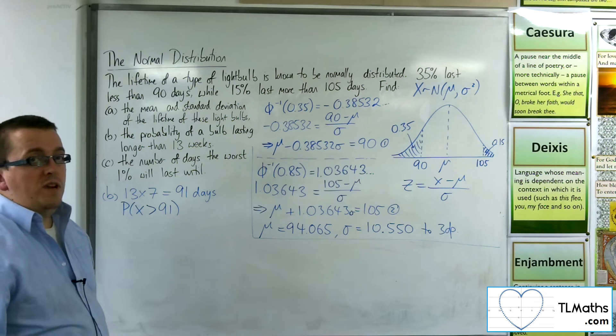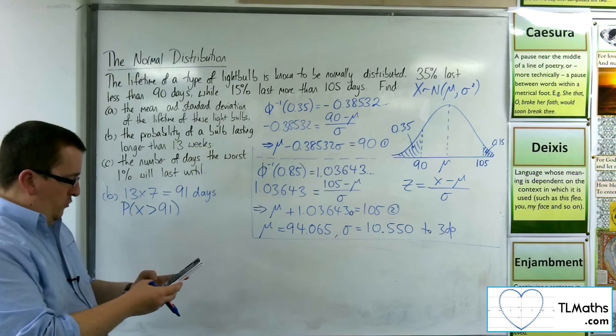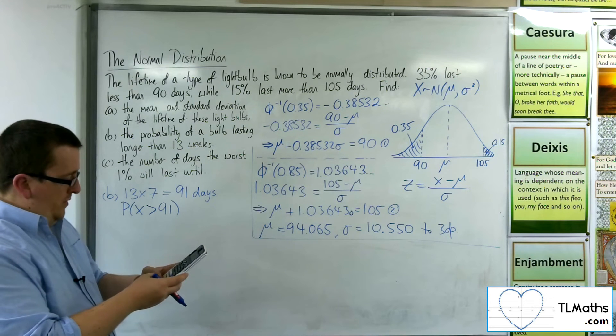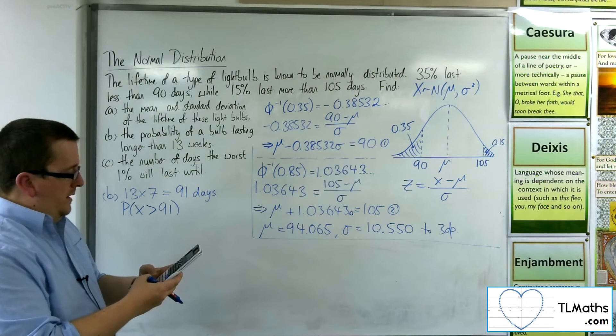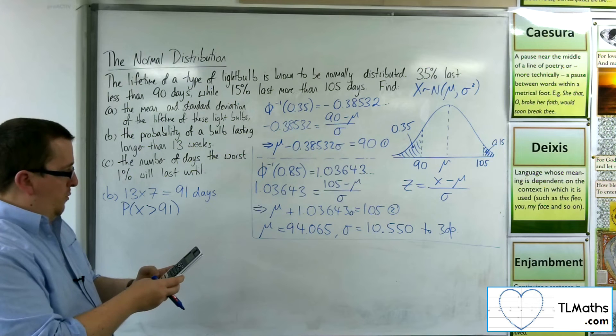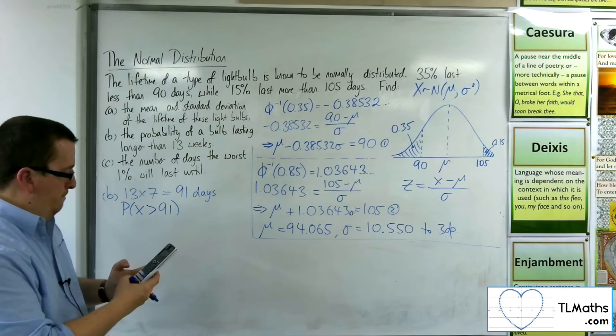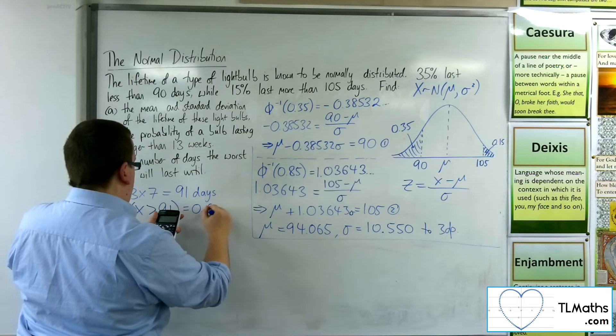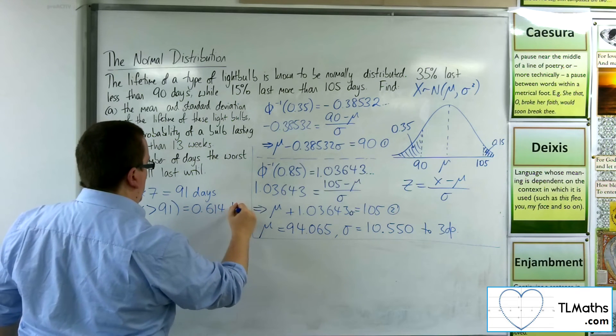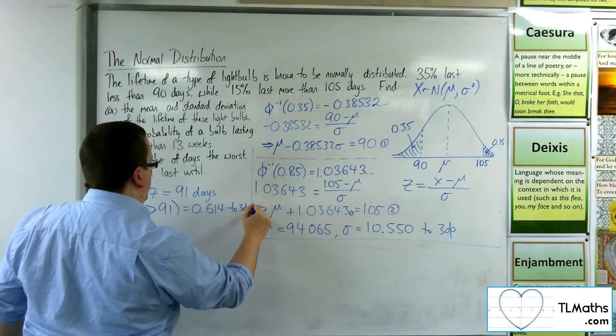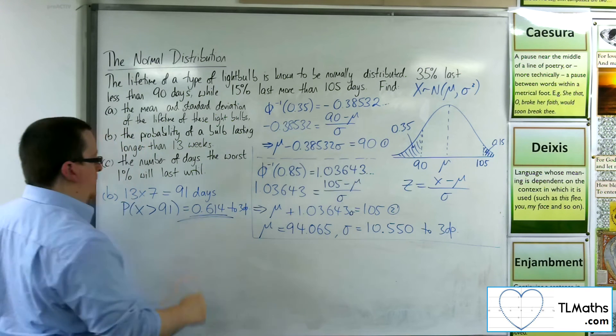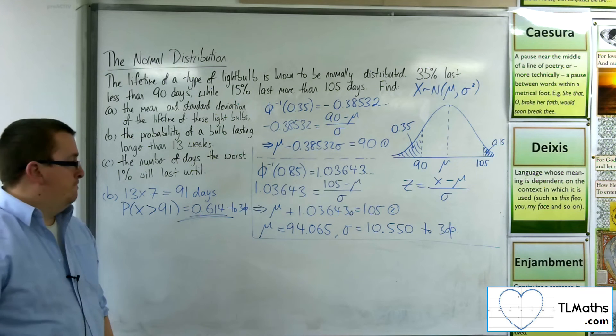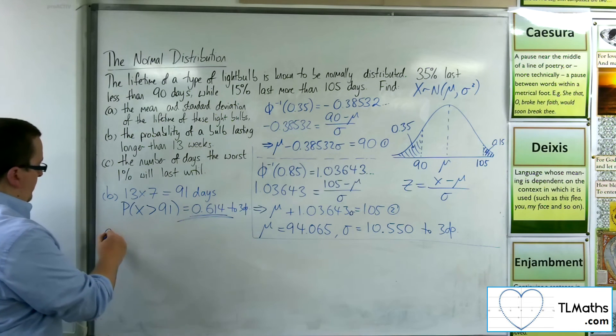So 191 seems reasonable. I'm just going to put in 200. And the sigma is 10.550. And the mu is 94.065. And so I get 0.614 to three decimal places there. So 0.614 is my probability.